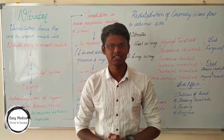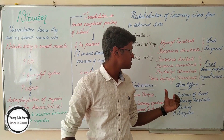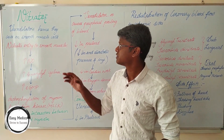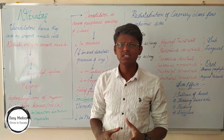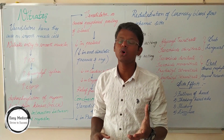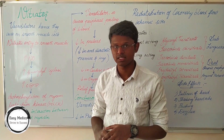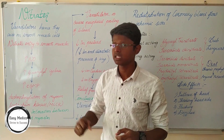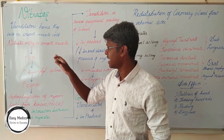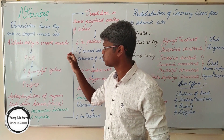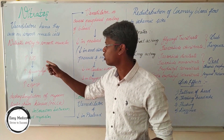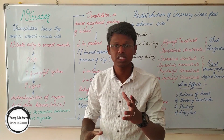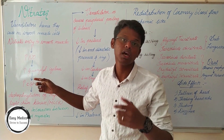Now let us move on to nitrates — their mechanism of action, indications, side effects, and drugs. Nitrates are vasodilators which act on smooth muscle cells. The mechanism of action starts when these nitrates enter into the smooth muscle. As they enter the smooth muscle, they cause an increase in nitric oxide, and guanylyl cyclase increases, which helps in the conversion of nitric oxide to cyclic guanosine monophosphate, which is cGMP.